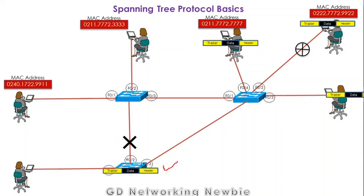At the final switch, one port is in the blocking state — this is the port from which the frame was received. This switch can receive but will discard the frame, and will not process it further. In this way, by changing the state of some ports to blocking, Spanning Tree Protocol helps us avoid Layer 2 looping, which is problematic because it introduces congestion by occupying all network media with looping frames.